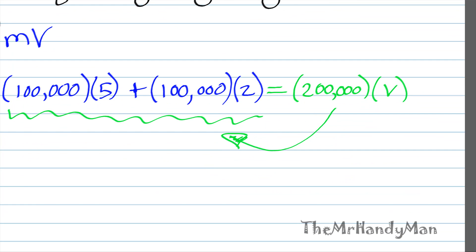But the solution is going to equal V is equal to 3.5 miles per hour.